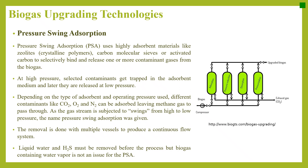Another biogas upgrading technology is pressure swing adsorption (PSA). PSA uses highly adsorbent materials like zeolites, carbon molecular sieves, or activated carbon to selectively bind and release one or more contaminant gases. At high pressure, selected contaminants get trapped in the adsorbent medium and are released at low pressure. Depending on the type of adsorbent and operating pressure, different contaminants like CO2, O2 and N2 can be adsorbed, leaving methane to pass through. The removal is done with multiple vessels to produce a continuous flow system. Liquid water and H2S must be removed before the process.